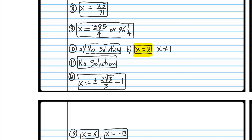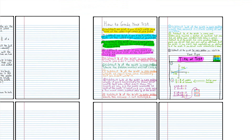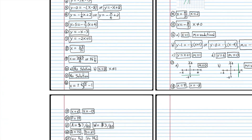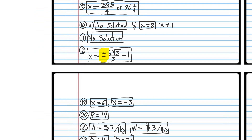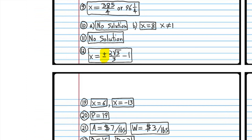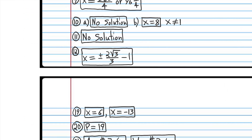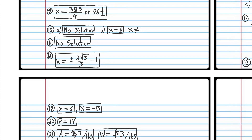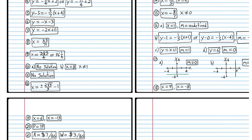This is a solution; this is not a solution, because when you plug it in it doesn't work. You need to write plus or minus. If you didn't write plus or minus, then subtract one-fourth of the points for that problem — that would be one point. Subtract one point for that problem.